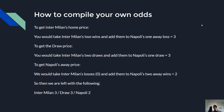So how do we compile our own odds? To get Inter Milan's home price, we take their two wins and add them to Napoli's one loss, which gives us three. To get the draw price, we take Inter Milan's two draws and add them to Napoli's one draw, which gives us three. To get Napoli's away price, we take Inter Milan's losses — there weren't any — and add them to Napoli's two wins, which gives us two. So eight games in total: three assigned to Inter Milan, three to the draw, and two to Napoli.